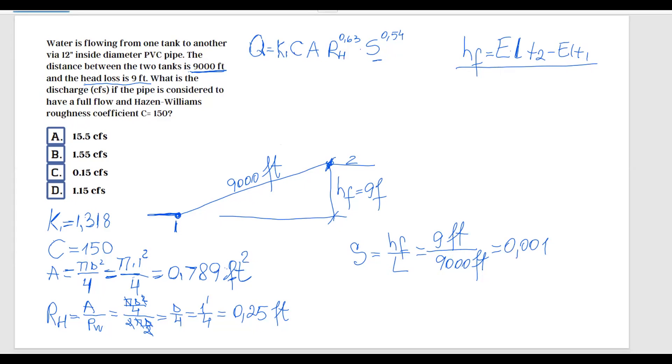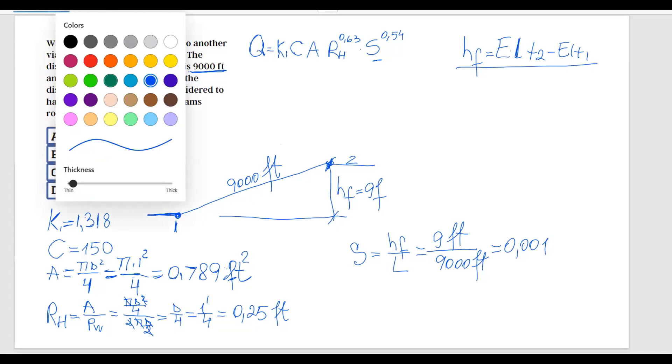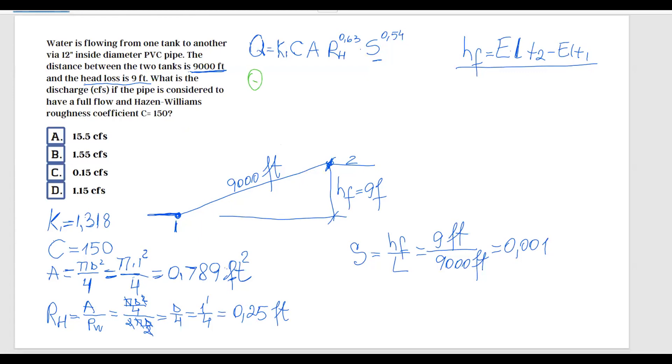Wonderful, so now we have everything we need to substitute in this initial formula. Q is going to be equal to K1, which is 1.318, multiplied by 150, multiplied by the area which was 0.789 square feet, multiplied by hydraulic radius which was 0.25 to the power 0.63, and multiplied by the slope which is 0.001 to the power 0.54. Now it's just a matter of inputting this into your calculator, and you should get a value of 1.55 cubic feet per second. So the correct answer is B.